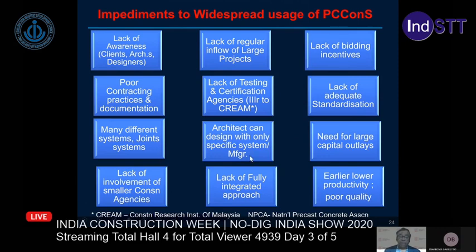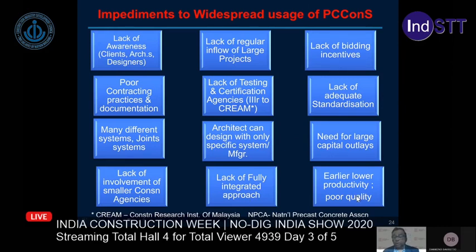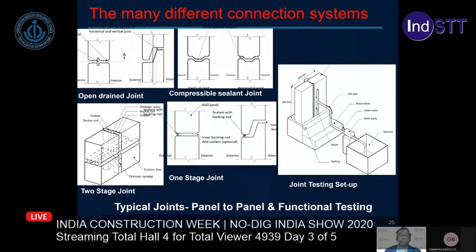An architect currently can design with only one specific system or manufacturer. Large capital outlays are required for setting up manufacturing facilities, which is why many smaller construction agencies are not involved — India has a huge number of middle and small contractors who are not getting into this segment. The fully integrated approach — from customer requirements through planning, manufacture, erection, and facilities management — is still not prevalent. Productivity is relatively low, quality keeps fluctuating, and there are many different joint systems without established testing methods, which gives precast concrete construction a bad reputation.